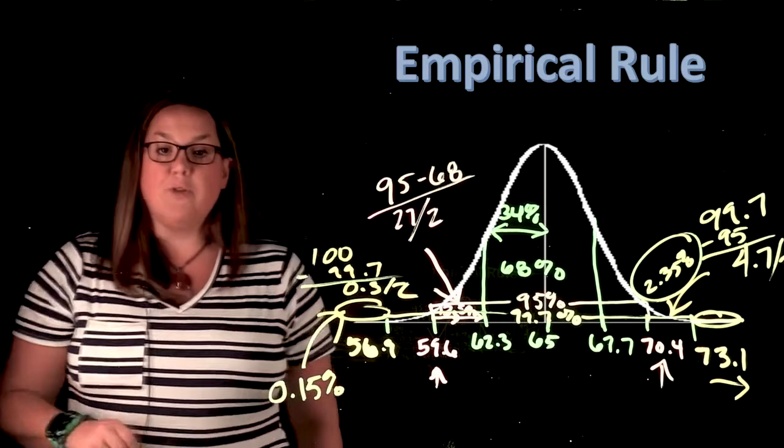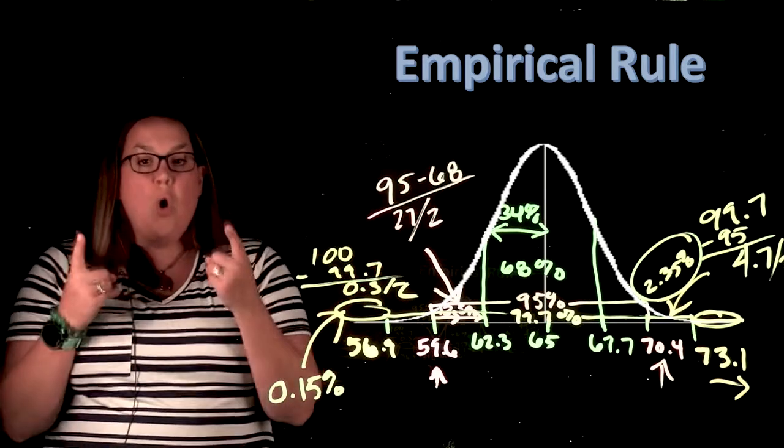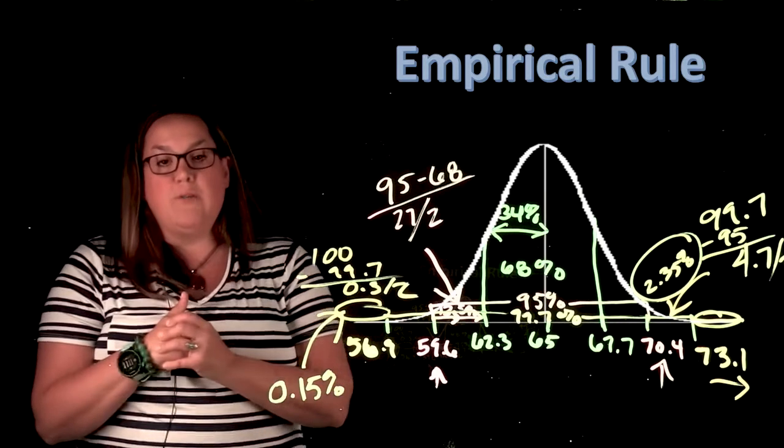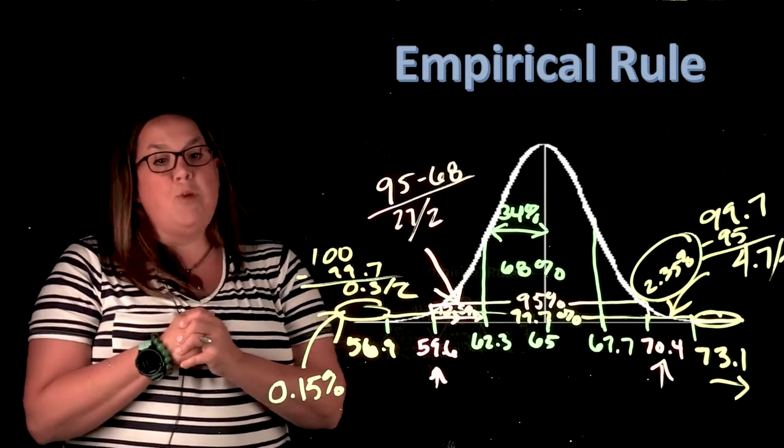And in the next video, we'll talk about what happens if you're not at that perfect one, two, or three standard deviations from the mean. We'll be using Z-scores to do that. See you then. Bye-bye.